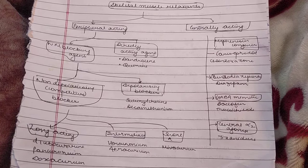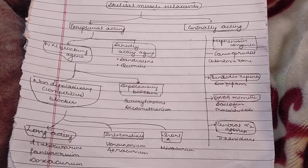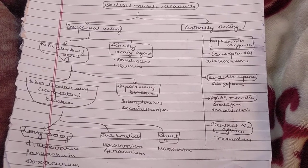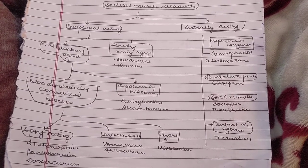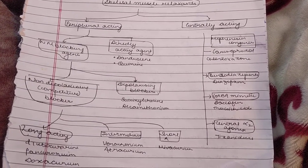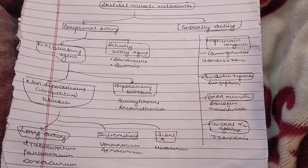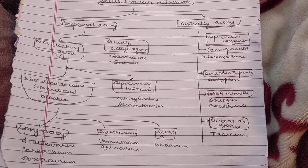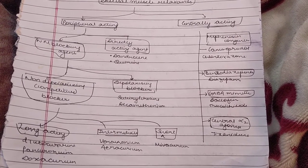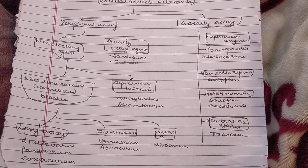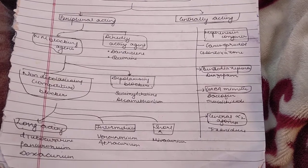The depolarizing blockers include succinylcholine and decamethonium, whereas the non-depolarizing blockers are categorized as long-acting, intermediate, and short-acting — for example, d-tubocurarine, vecuronium, atracurium, and others.